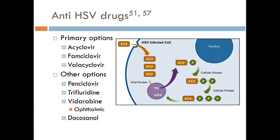For anti-HSV drugs, the primary options I want you to focus on are acyclovir and valacyclovir. Other options like vidarabine (ophthalmic) and docosanol (Abreva, OTC) won't be tested. Acyclovir gets pulled into HSV-infected cells, gets substituted in during replication via cellular kinase, and ultimately causes chain termination — a mechanism similar to some HIV drugs. If I ask you about an anti-HSV drug, the correct answer is most likely acyclovir or valacyclovir.